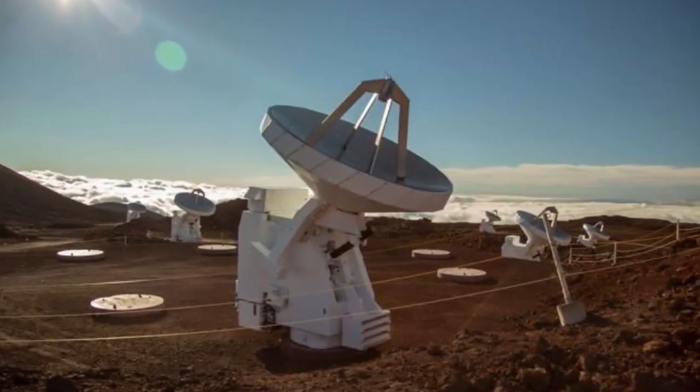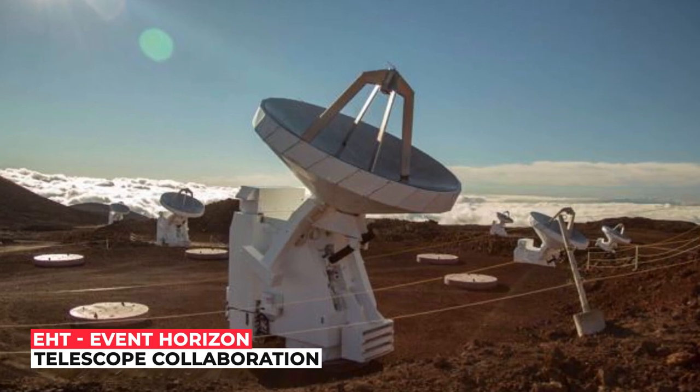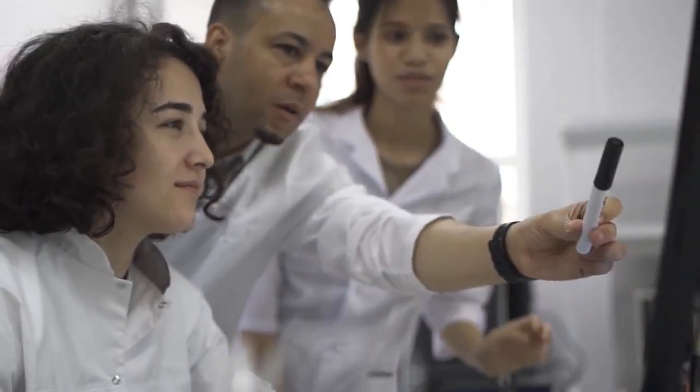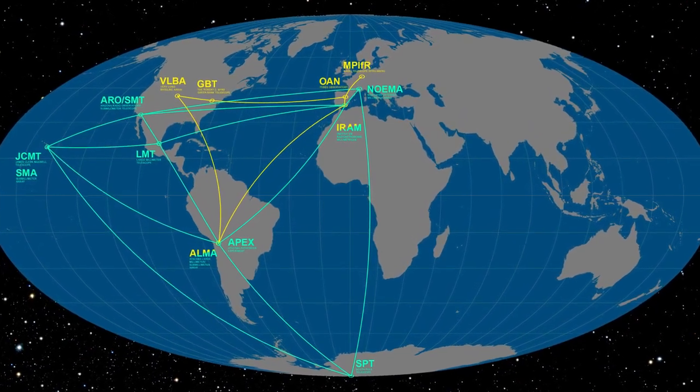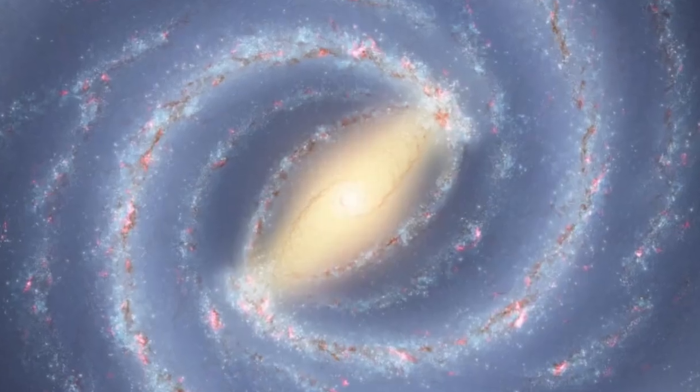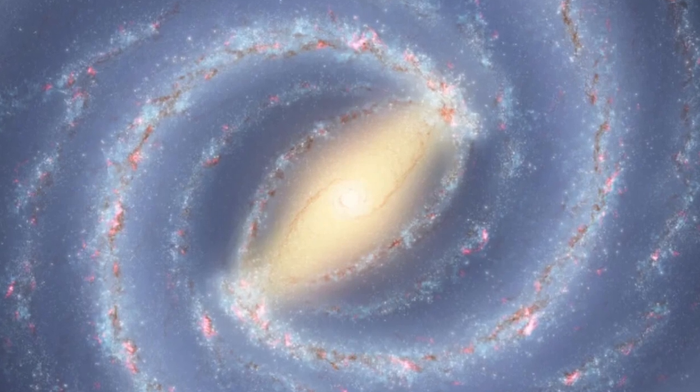The image was created by the EHT Event Horizon Telescope Collaboration, a global research team that used observations from a global network of radio telescopes. The image is a long-awaited look at the massive object at the heart of our Milky Way galaxy.